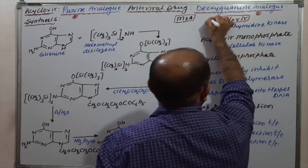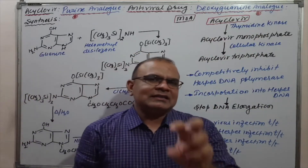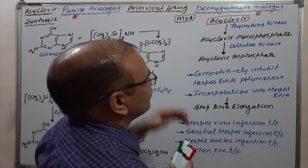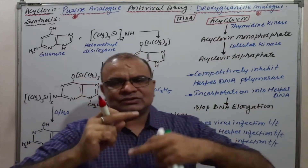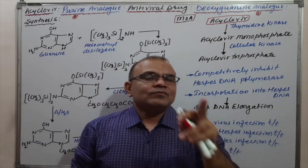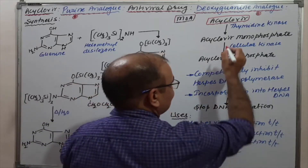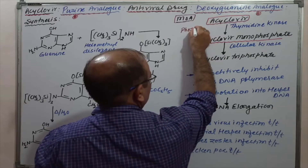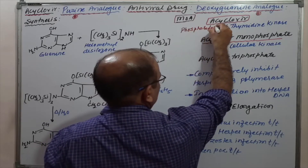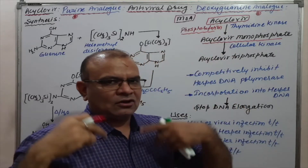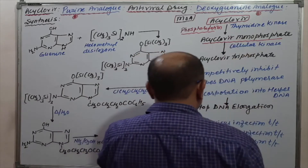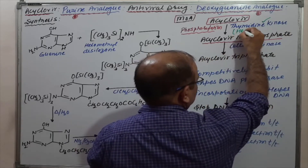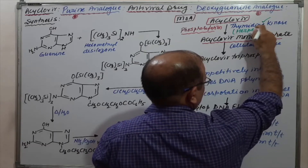Acyclovir is a very important drug. It goes to the virus where it acts as an antiviral drug. Acyclovir is converted step by step: acyclovir is converted to acyclovir monophosphate — this step is known as phosphorylation, meaning the attachment of a phosphate group — and this occurs in the presence of thymidine kinase from herpes virus.